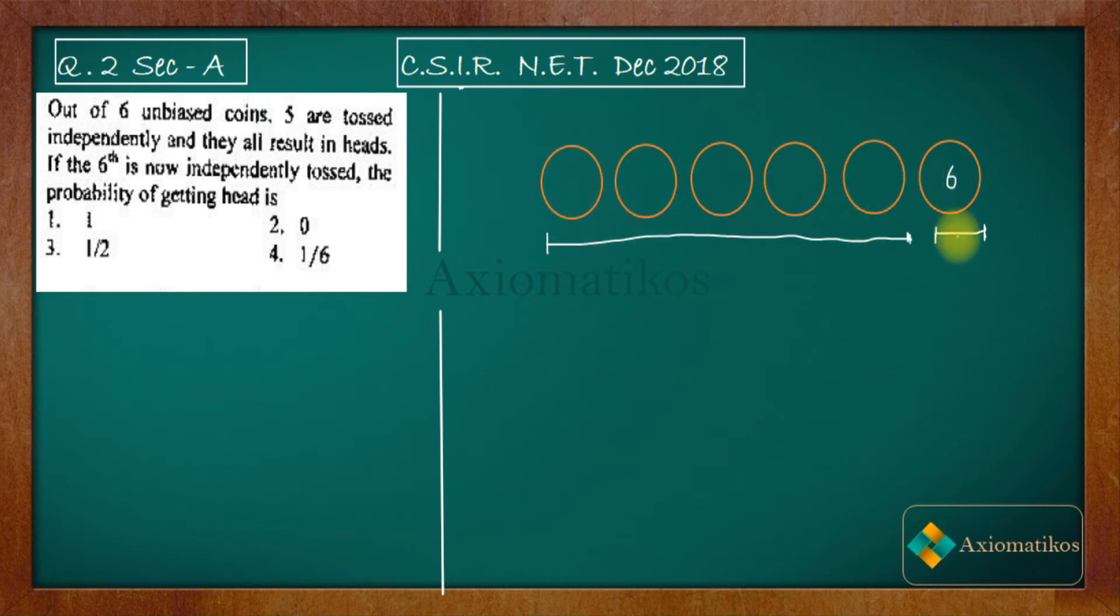Are you getting my point? You are tossing it independently. It has nothing to do with the five coins. So the information about five coins that was given in the problem was just to confuse you. It has nothing to do with the sixth coin.